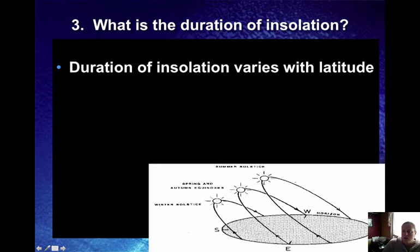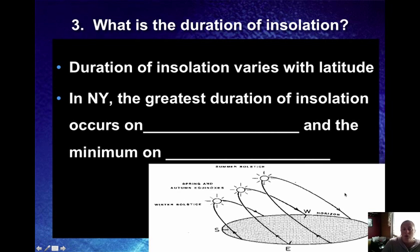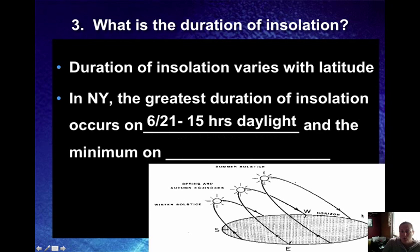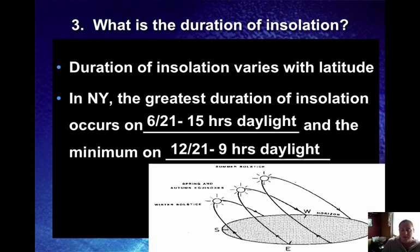Duration of insolation varies with latitude — depending on where you are on Earth's surface, the amount of daylight each area receives changes based on its location. In New York, the greatest duration of insolation — our longest day — happens on June 21st with about 15 hours of daylight. The minimum, our shortest day, is on December 21st with about 9 hours of daylight.